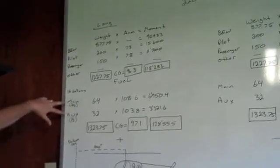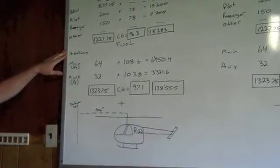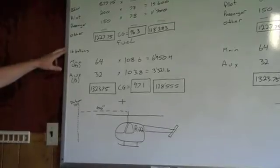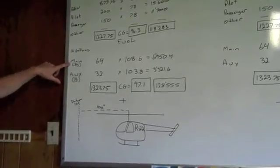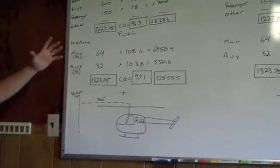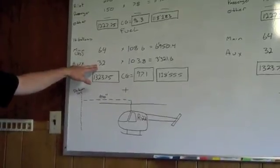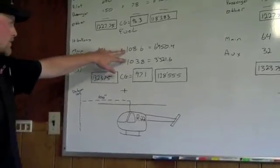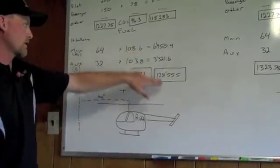Then we add our fuel. On any given day we have about 16 gallons of fuel in our helicopter, so I decided to use 16 gallons. We break that up one third in the aux and two thirds in the main, which equates to 64 pounds in the main and 32 pounds in the aux. Again we are using the arms found in the POH and we do the math out and add it together.